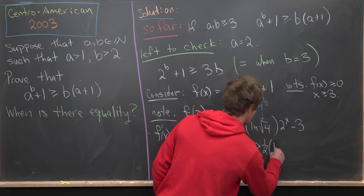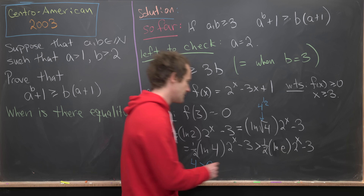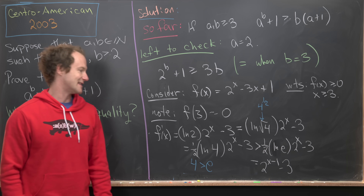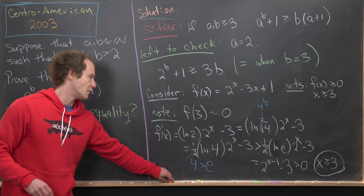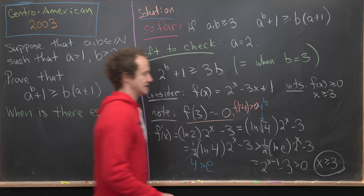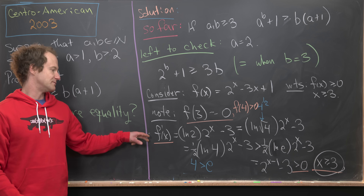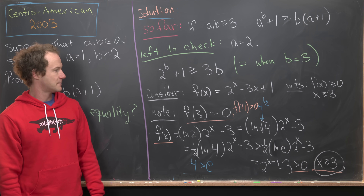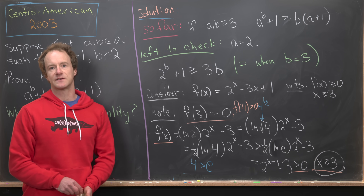Since four is bigger than e, and the natural log function is increasing, this is strictly bigger than one half times natural log of e times two to the x minus three, which simplifies to two to the x minus one minus three. This is clearly bigger than zero for x bigger than or equal to three. So f of three equals zero, f prime of x is bigger than zero for x at least three meaning f is increasing after x equals three and can never return to zero or become negative, so the inequality is satisfied.